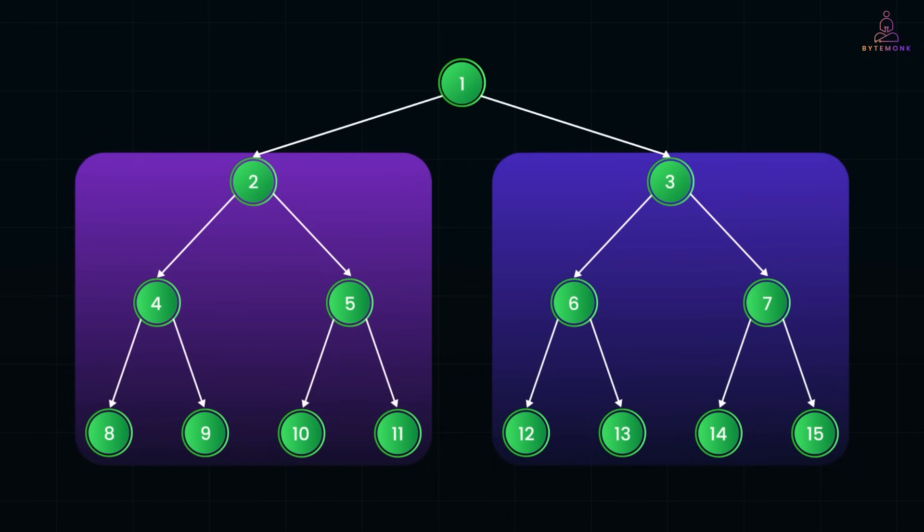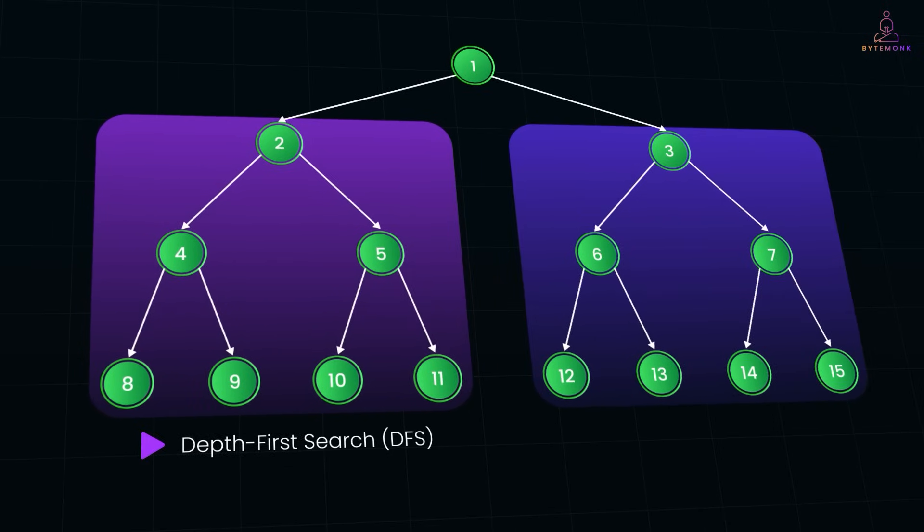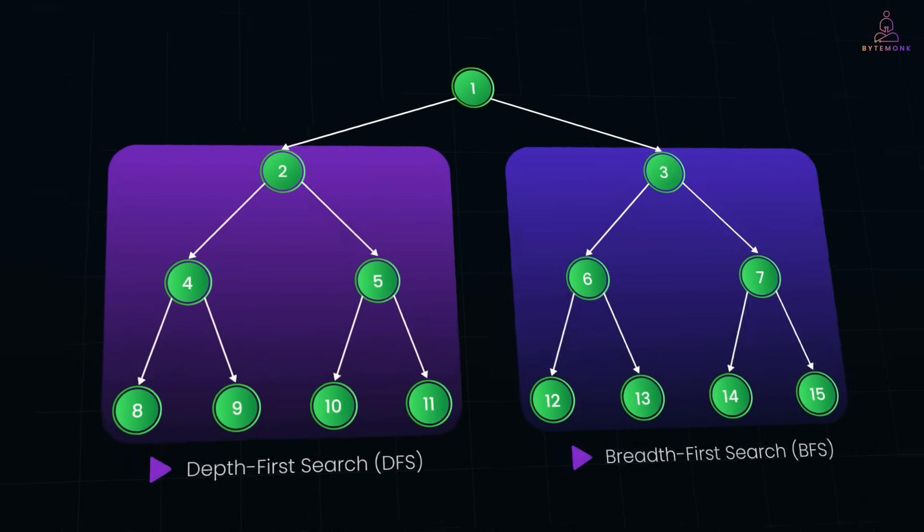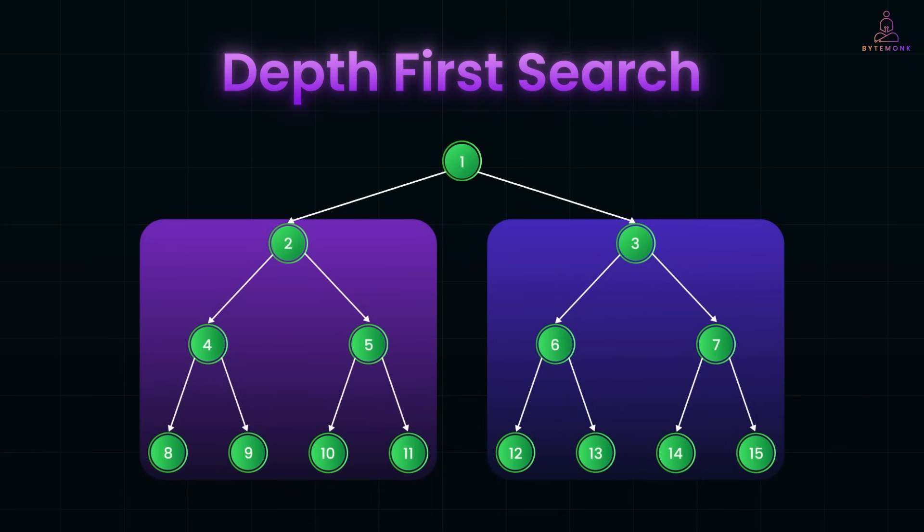There are two broad categories: depth-first search or DFS and breadth-first search or BFS. Depth-first search is like saying, let me finish exploring this entire path before I look at others. It goes deep, down one child, then that child's child, and so on, until it hits a leaf, then backtracks. Within DFS, we have three classic flavors based on when we visit the node.